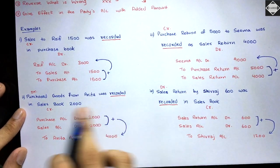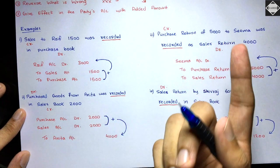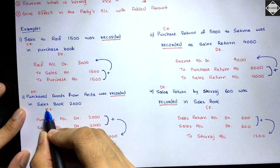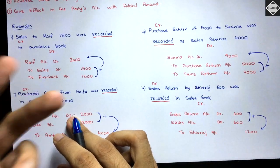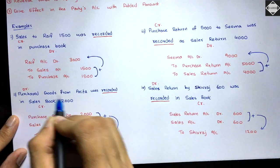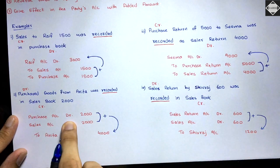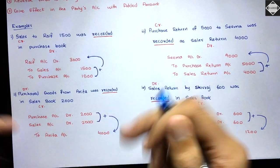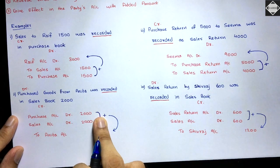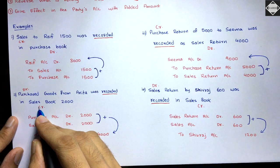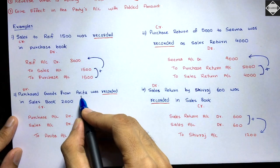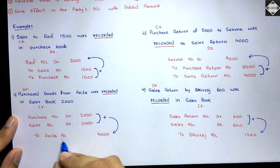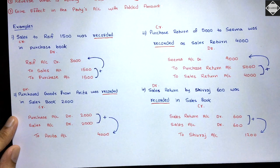Second heterogeneous transaction: 'Purchase goods from Anita was recorded in sales book ₹2000.' Keyword: recorded — first category. Purchase (debit balance) recorded in sales book (credit balance) — debit into credit — heterogeneous. Three steps: Record right — purchase is right; purchase account debit ₹2000. Reverse wrong — sales is wrong; sales account debit ₹2000. Give effect in party's account: ₹2000 + ₹2000 = ₹4000; to Anita account ₹4000.